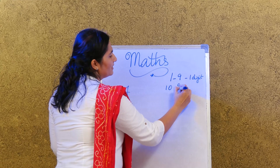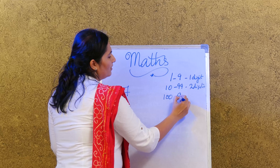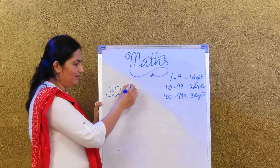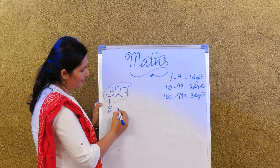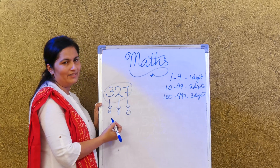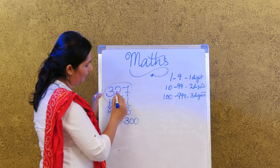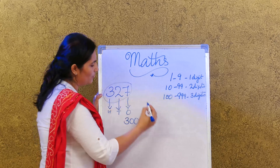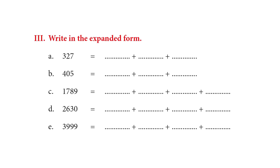10 to 99 is a 2-digit number, and 100 to 999 is a 3-digit number. So 327 is a 3-digit number. For a 3-digit number there is hundreds, tens, and ones. The expanded form of 327 is 300 plus 20 plus 7. When 2 comes in the tens place, its value becomes 20.